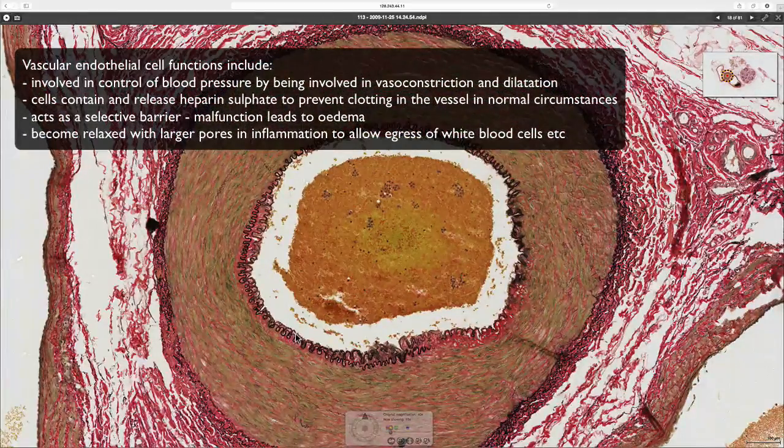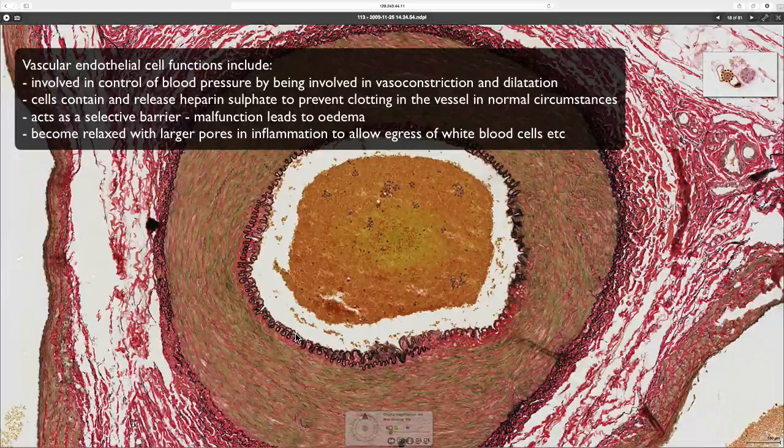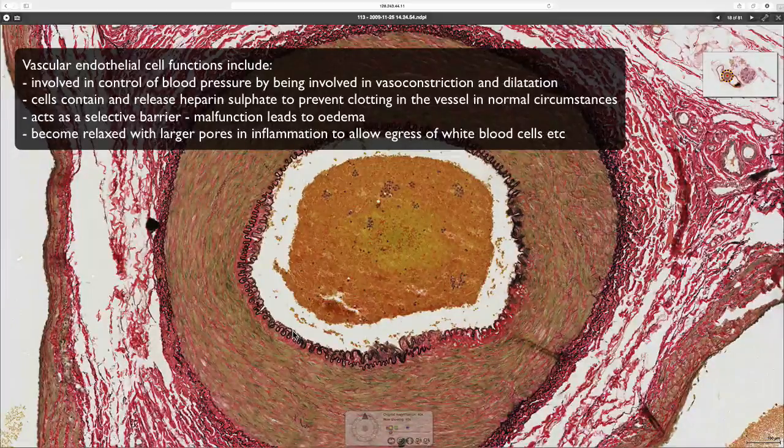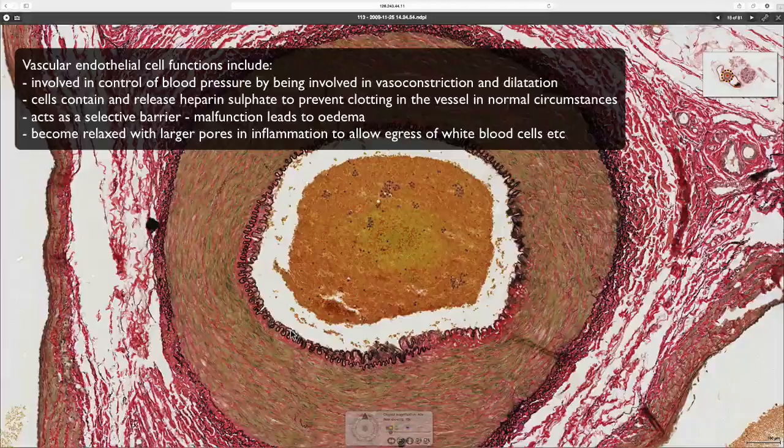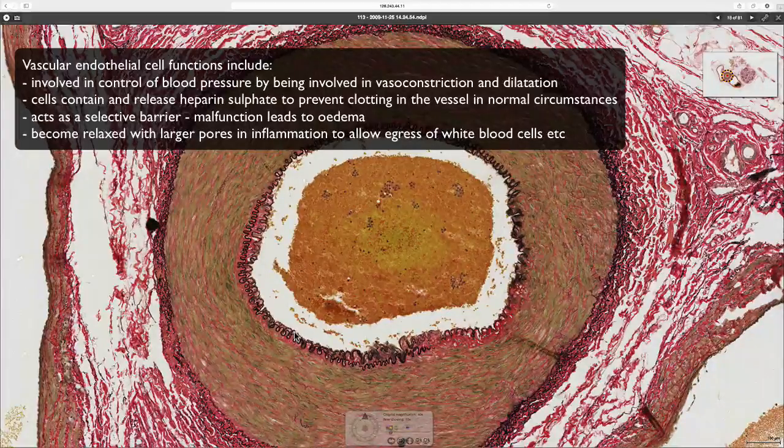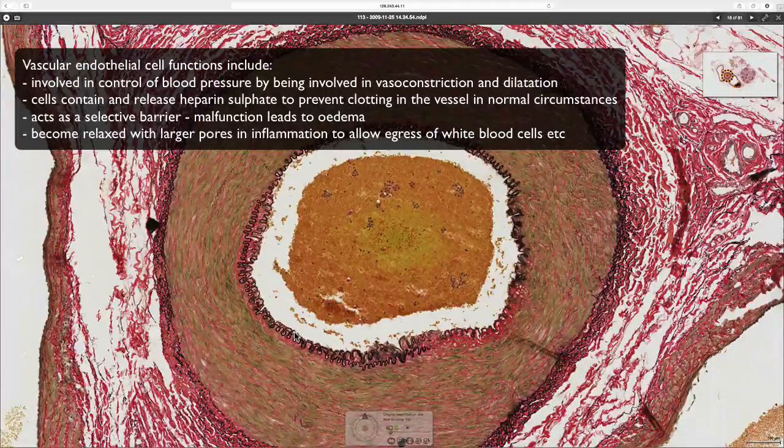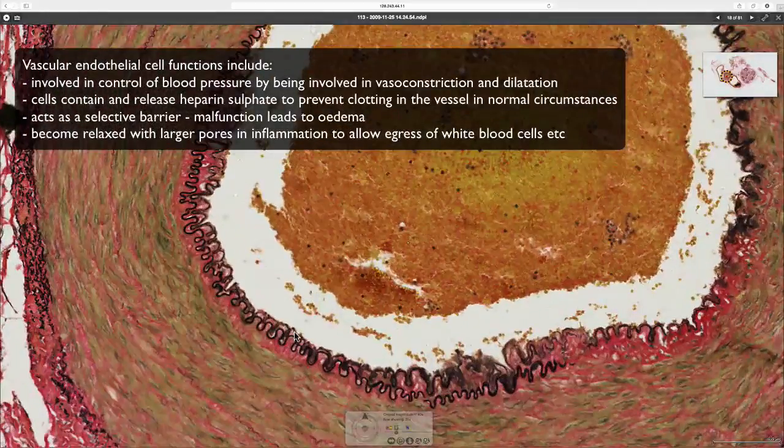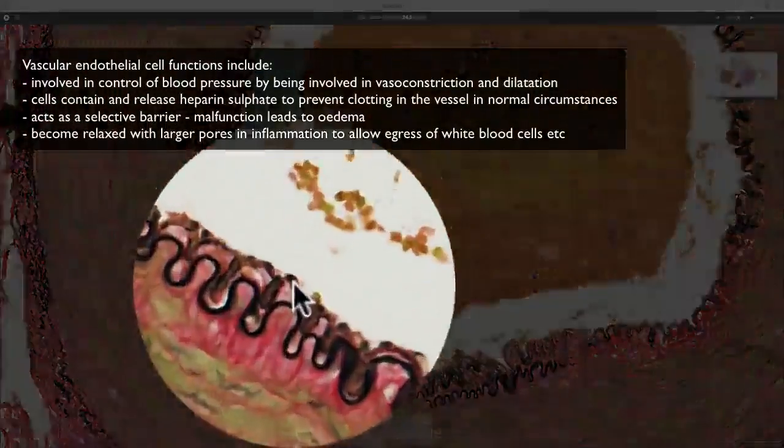All vessels are lined with endothelial cells, including veins and capillaries, arterioles and venules. A capillary is simply just a layer of endothelial cells plus its basement membrane. It's difficult to see the detail of an endothelial cell because they're so small, but you can see the flat nucleus just there.